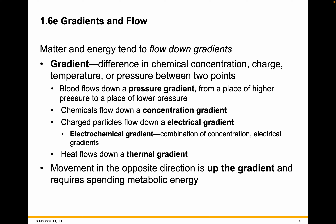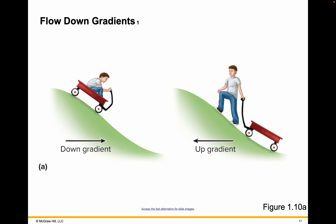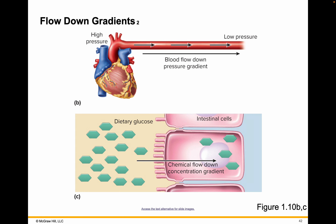Movement in the opposite direction of a gradient is going to require spending metabolic energy — you're going to have to use a pump instead. If you put a wagon up the hill, you can ride it down, but getting it up requires energy. The same is true when dealing with the movement of materials. If we can get things into the cell down their concentration gradient, there are situations where we can just get them down the hill; other times we'll have to pump them in. We'll talk more about these pressure and chemical gradients as we get into cells and tissues.